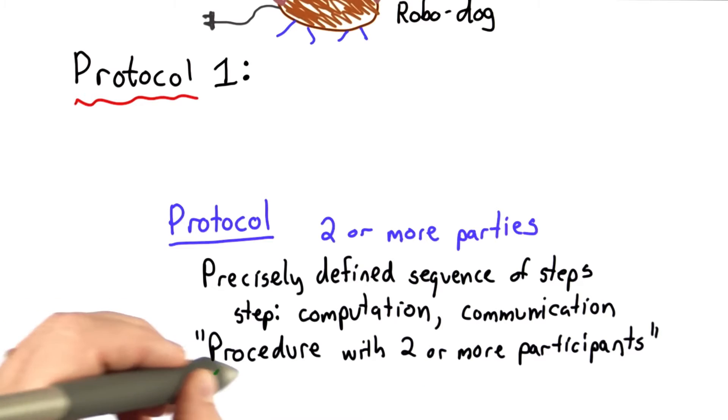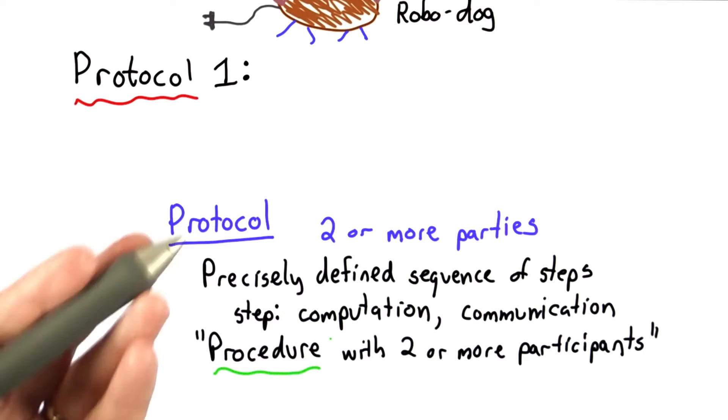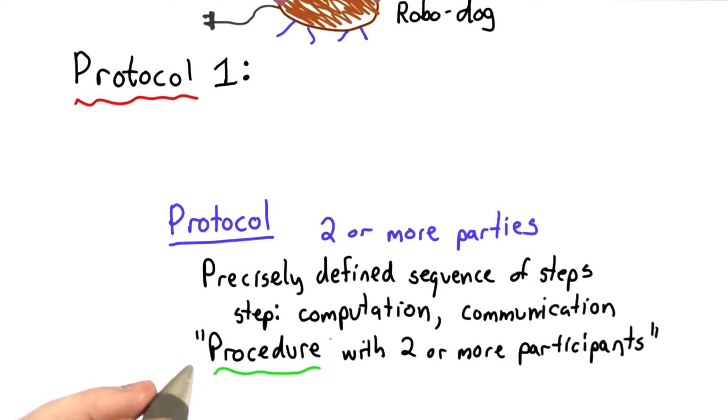One way to think of this, it's really the same thing we mean by a procedure in computing. That's something that we can define precisely enough that we can follow it mechanically. But unlike a procedure, which is thought of normally as being followed by one processor, or at least a set of processors controlled by the same party, with a protocol, we have two or more participants involved. So that's why it involves both computation as well as communication.